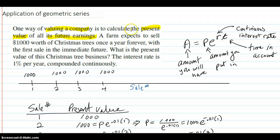The farm expects to sell $1,000 worth of Christmas trees once a year forever, with the first sale happening pretty much now. What is the present value of the Christmas tree business? The interest rate is 1% per year, compounded continuously.